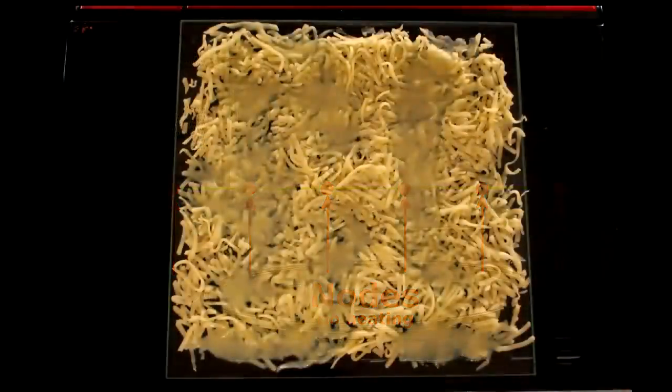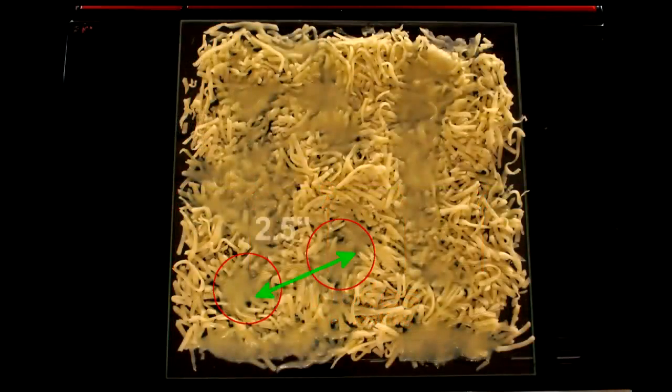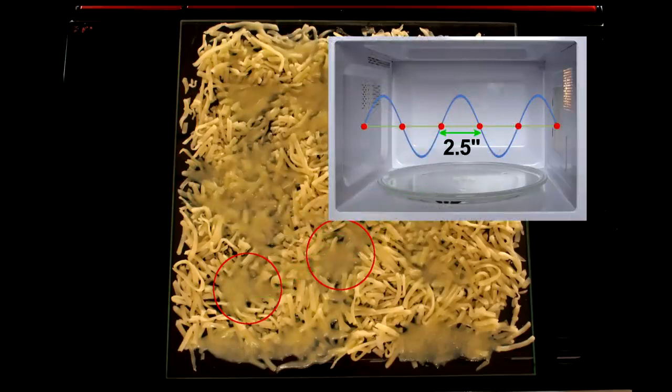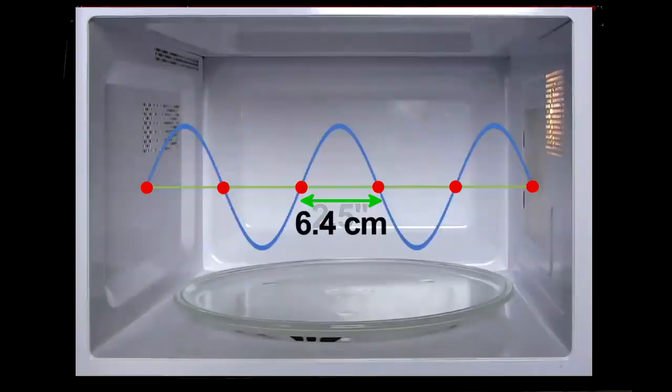If I measure the distance between melted cheese spots, I find about two and a half inches. That would be half the wavelength, the distance between nodes, and is pretty close to the actual wavelength of microwave radiation used.